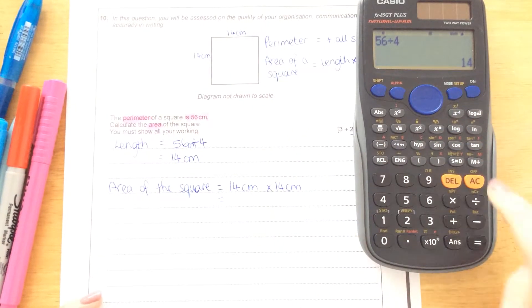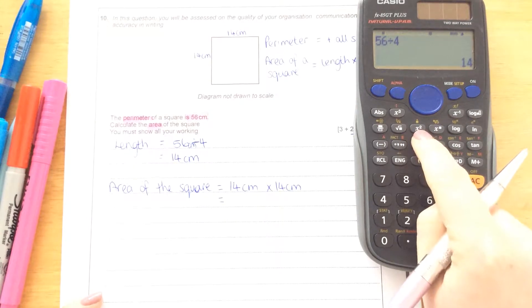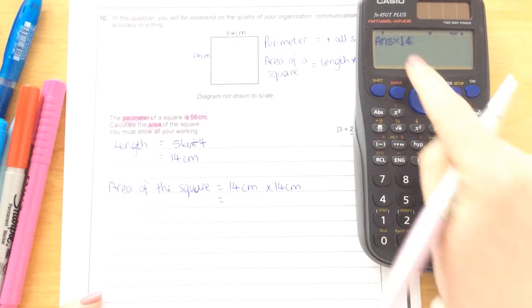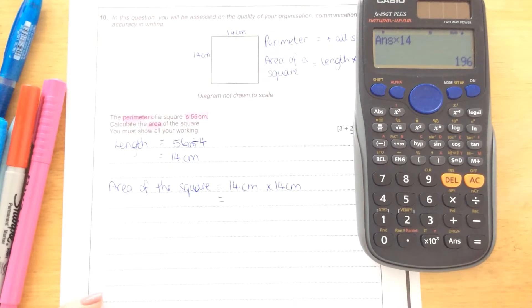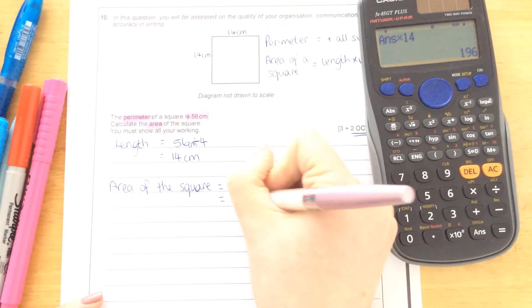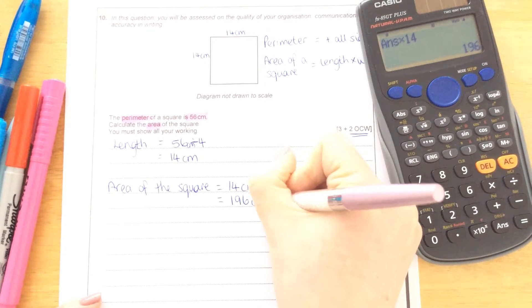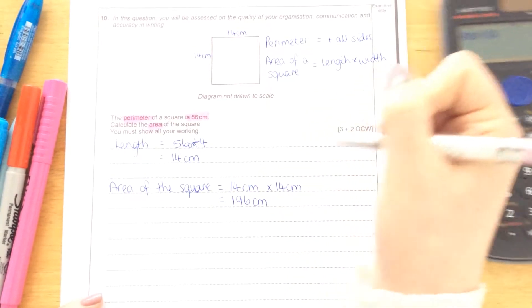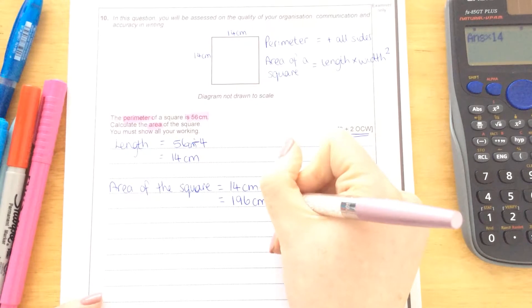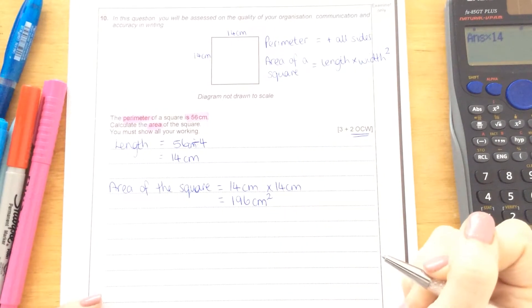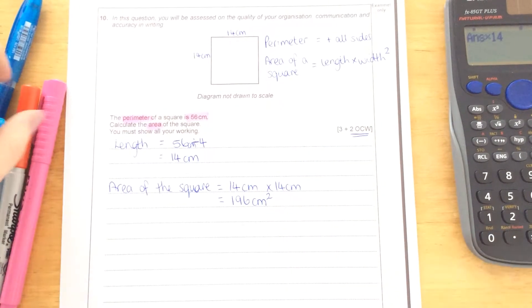So 14. I could press the square button here because I'm timesing it by itself, or I could times it by 14 again. And that would give 196 centimetres. Area is always in squared because you times two measurements together. So that there will give you the three marks.